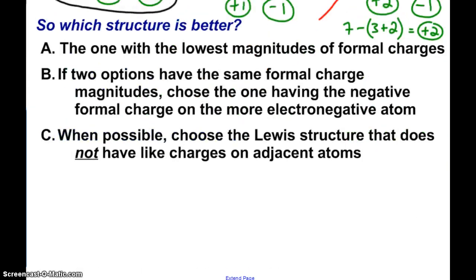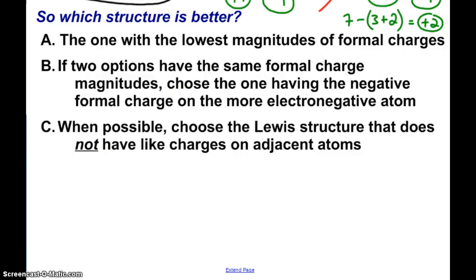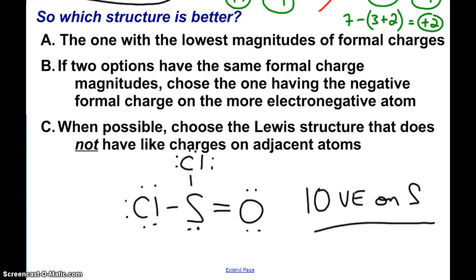In all actuality, of course, what we end up seeing happening is we've got sulfur indeed as the central atom, chlorines on both sides, and a double bonded oxygen. When I do that, there are no formal charges. And sulfur still has a lone pair, and it ends up with ten valence electrons. But that's okay, because it is one of those exceptions to the octet rule.